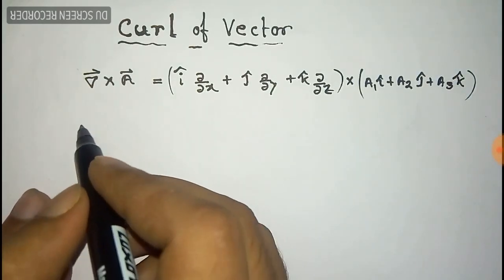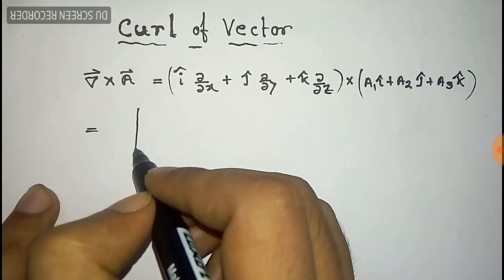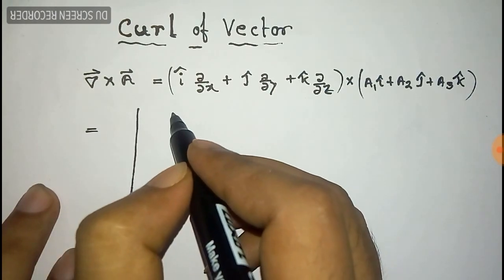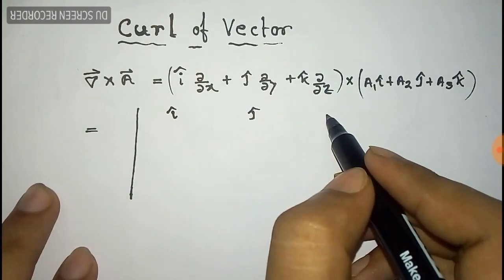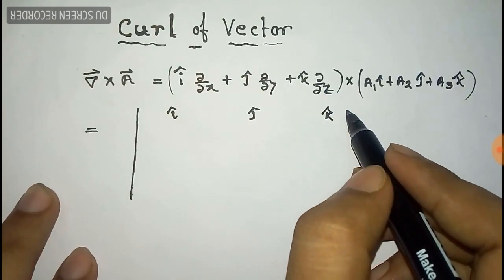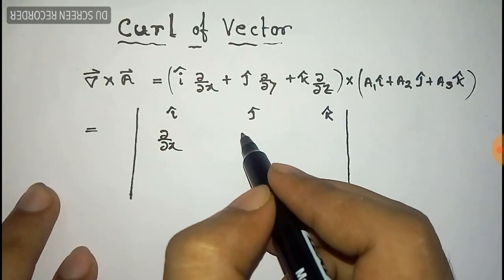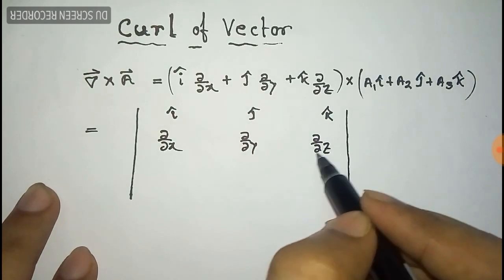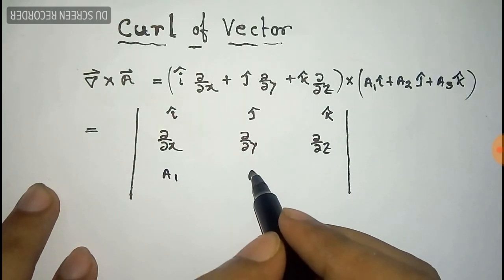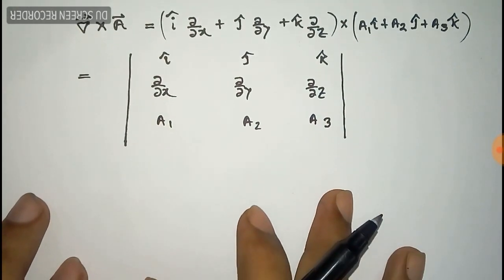After multiplying it, we get it in matrix form, and that will be like: first row with i, j, k. This 3 by 3 matrix has ∂/∂x, ∂/∂y, and ∂/∂z at the second row, and a₁, a₂, a₃ at row number 3.